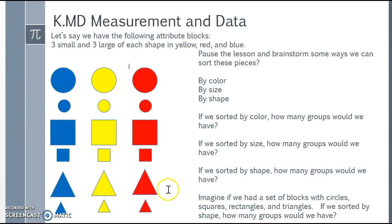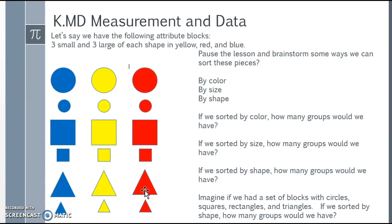If we sorted by shape, we have three different shapes: circles, rectangles, and triangles. Imagine if we had a set with circles, squares, rectangles, and triangles — sorted by shape that would give us four different groups.